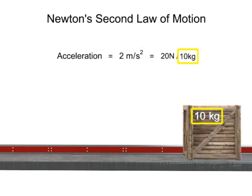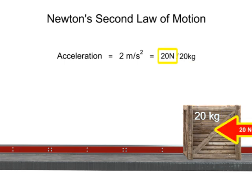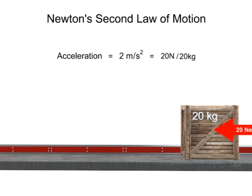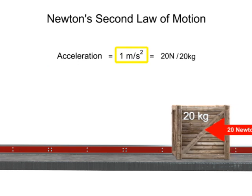If the mass of the box is increased to 20, but the force stays the same, the acceleration will decrease in inverse proportion to 1 meter per second squared.